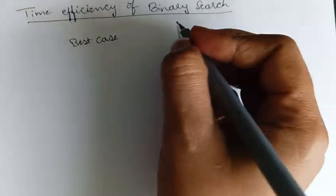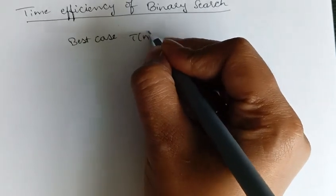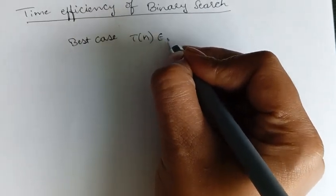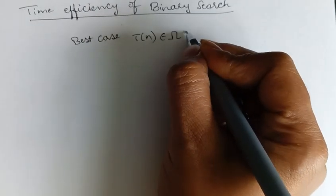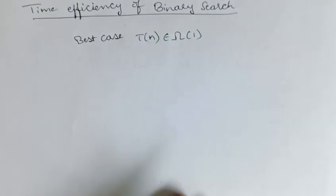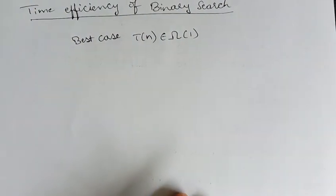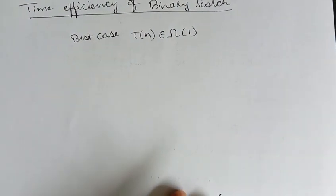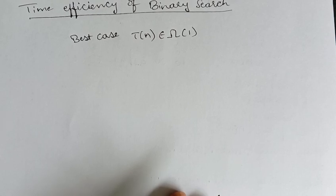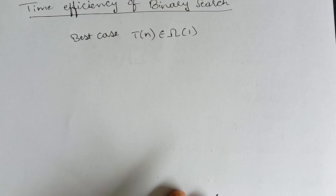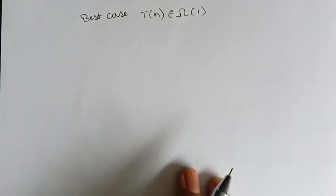In such a condition, we don't need to do anything. So if the first element itself is the key element, then the best case efficiency is T(n) ∈ Ω(1), because only one iteration will do — that is, one comparison of the key element and the first element. So the best case efficiency will be T(n) ∈ Ω(1).